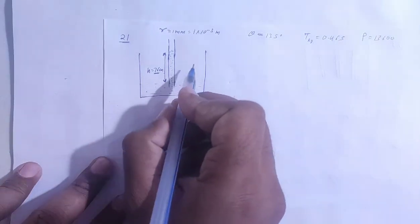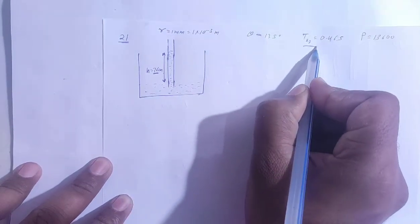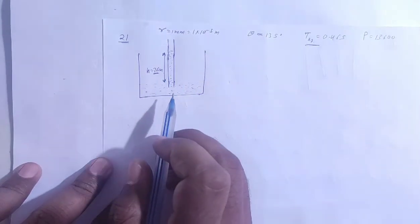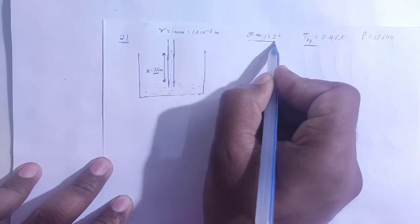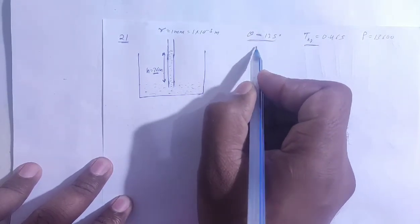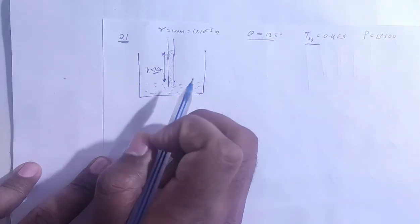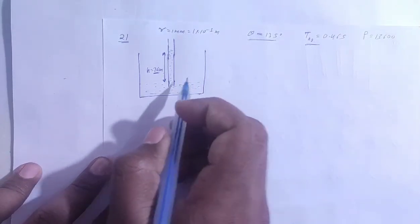Now if we consider the surface tension, then what will change in its height? If we consider the surface tension, then the angle is obtuse angle. So the height will decrease, it will be 76 cm, then it will be less. So we will do this work.